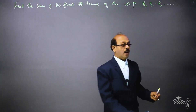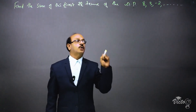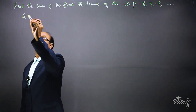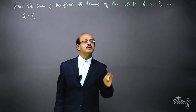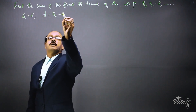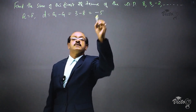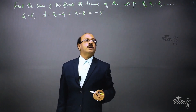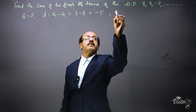We have to select an equation according to the question. From the question we know the first term a is equal to 8, and we can find the common difference: D is equal to a2 minus a1, which is 3 minus 8, equal to minus 5. The last term is not known, but n is known to be 22.